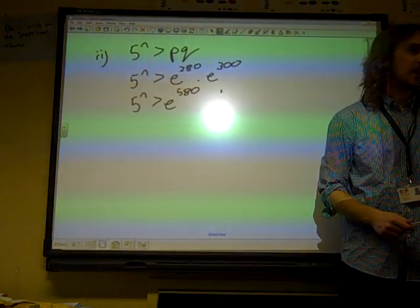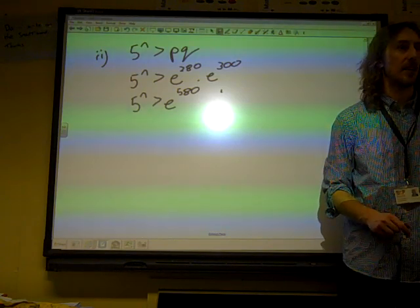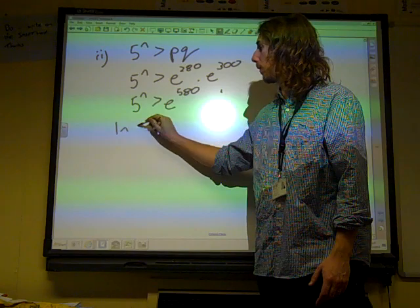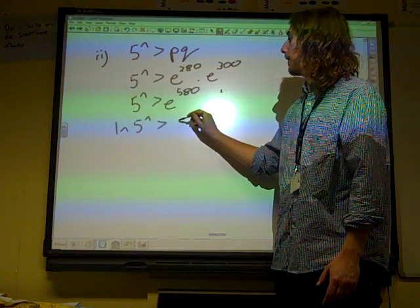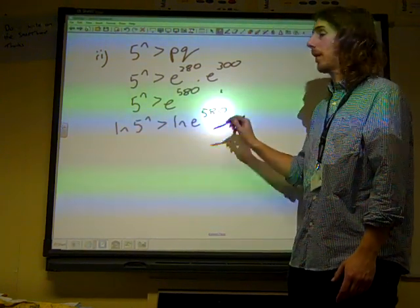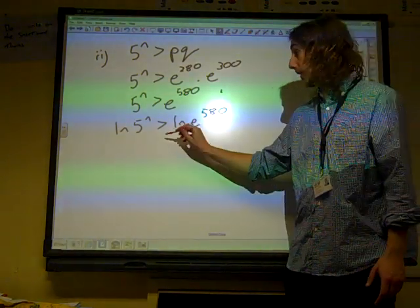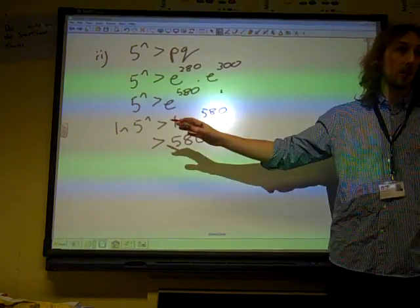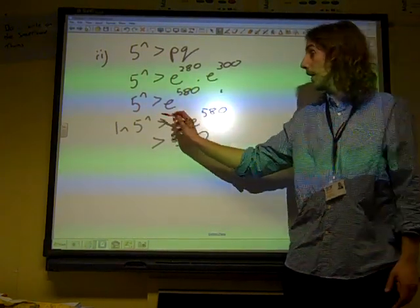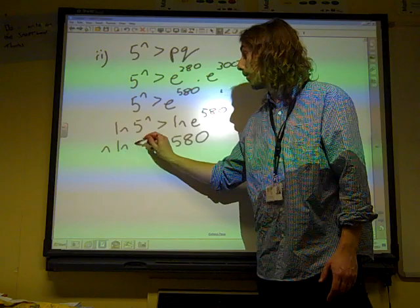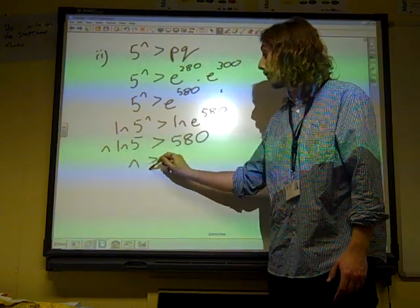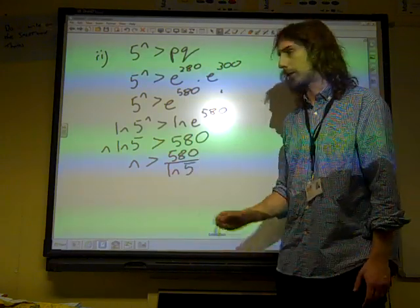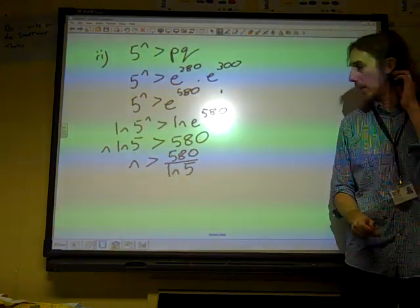Let's rearrange this statement. Let's take natural logs of both sides. It makes sense to take natural log because we've got E over here. So the natural log of 5 to the N is greater than the natural log of E to the 580. As we've already demonstrated, that right-hand side is just equal to 580. The N comes down to the front. So we're saying that N is greater than 580 over the natural log of 5.